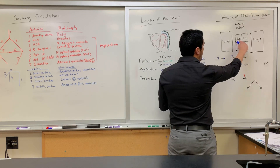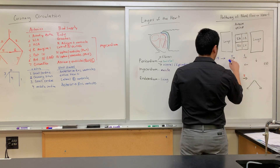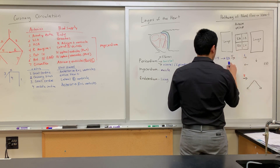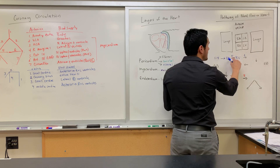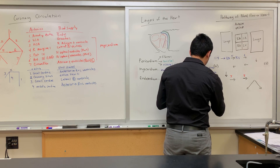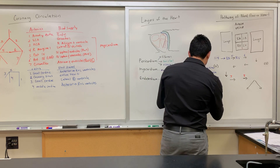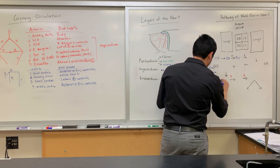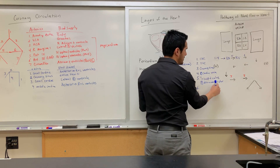From the right atrium, blood goes into the right ventricle. It has to travel through a particular valve known as the tricuspid valve, also called the right atrioventricular valve — since it connects the right atrium to the right ventricle.